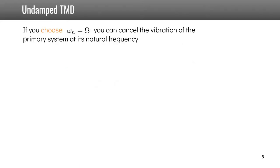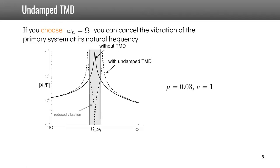Now if we choose this natural frequency of the tuned mass damper equal to the natural frequency of the primary system, then you can cancel the vibration of the primary system at its natural frequency. This is represented on this graph where we plot x1 over f as a function of frequency. Without tuned mass damper, the primary system has a resonance at capital Omega 1.